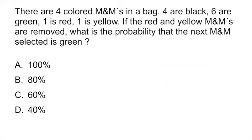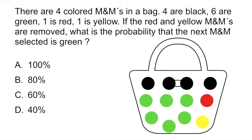Question 2. This is a question about probability. Here it's telling you that there are 4 M&M colors in a bag. 4 are black, 6 are green, 1 is red, 1 is yellow. If the red and yellow M&Ms are removed, what is the probability that the next M&M selected is green? So this is the situation that you have. 4 different colors and then they said that they're going to remove the green and the red.